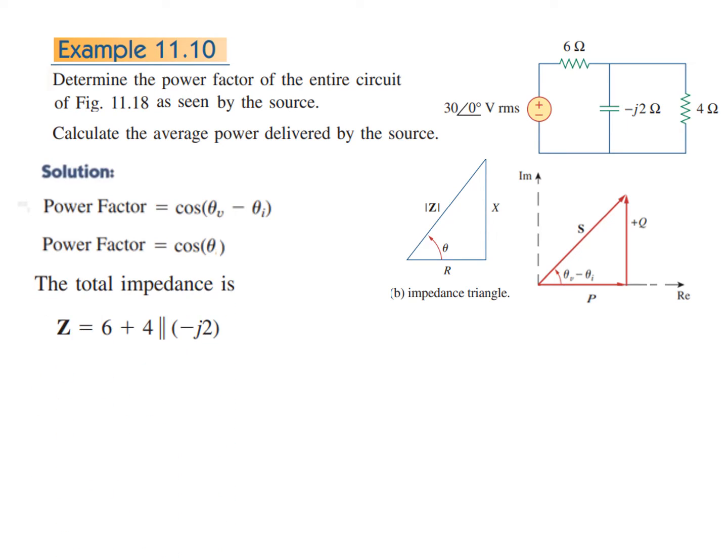Now we have to find first of all Z, the total impedance of the circuit. From the circuit you can see that these two are in parallel and the combination is in series with 6 ohms. So Z will be 6 plus 4 parallel minus j2. And solving this, here I'm mentioning that if you use your calculator in complex mode, you can directly get the answer.